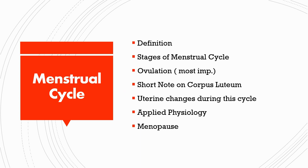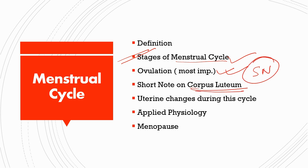Next is the menstrual cycle, where the phases or stages are highly important. The stages included in the menstrual cycle are: the menstrual phase, proliferative phase, ovulatory phase, and lastly the luteal phase. Ovulation is important for a short note, as are the corpus luteum and menopause.